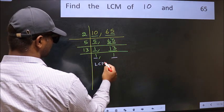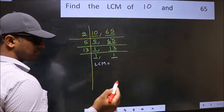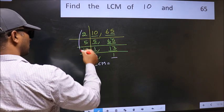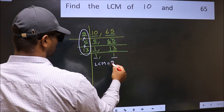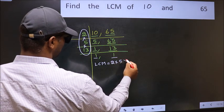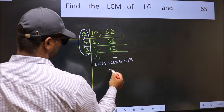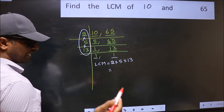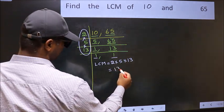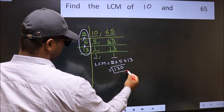So we got 1 in both the places. So our LCM is the product of these numbers. That is 2 into 5 into 13. When we multiply these numbers, we get 130 is our LCM.